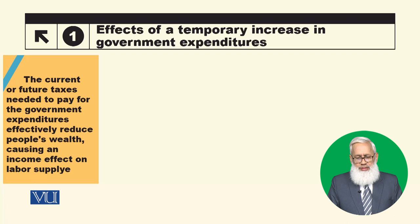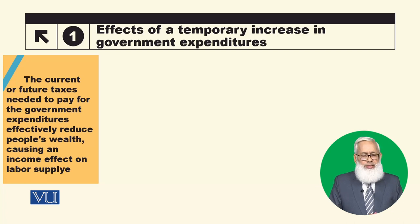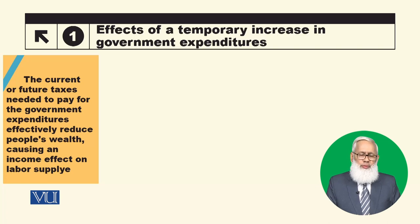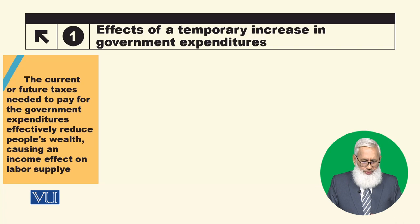This increase in government spending is temporary. What will it affect? Number one: the current or future taxes needed to pay for the government expenditure. We will add to our taxes in the future, not today. This will effectively reduce people's wealth, causing an income effect on the labor supply.